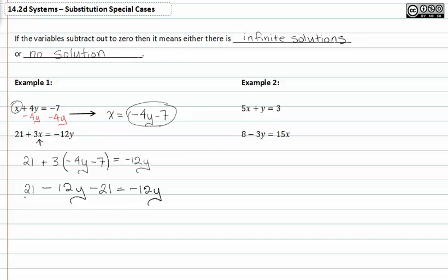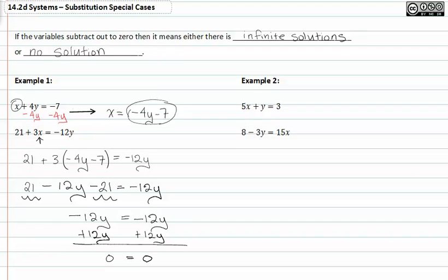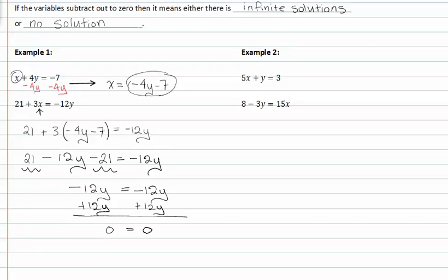From here, if we combine like terms, we see that 21 adds to zero, and we have negative 12y is equal to negative 12y. We see at this point that it's an identity, but we can keep going by adding 12y to both sides, and that gives us zero is equal to zero. Yes, there are infinite solutions because the variables subtract out to zero.